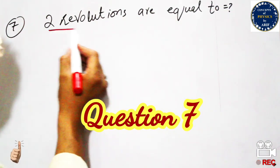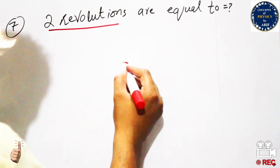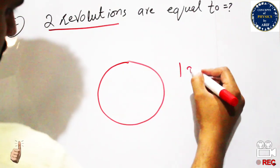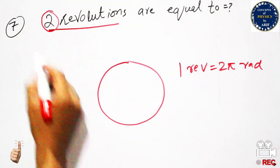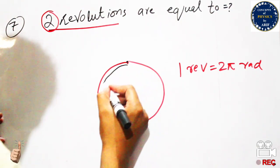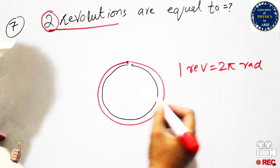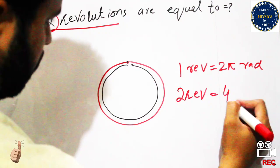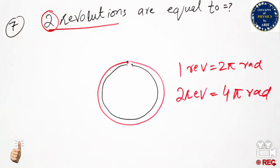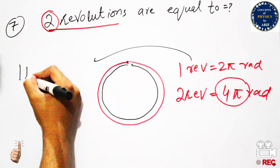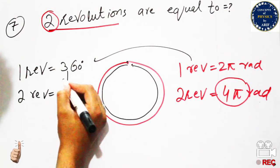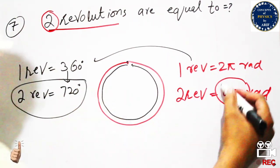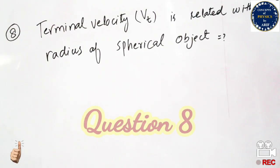The next question asks: two revolutions equals how many radians or degrees? One revolution equals 2π radians, so two revolutions equal 4π radians. You can also convert: one revolution equals 360 degrees, so two revolutions equal 720 degrees. You can put either 4π radians or 720 degrees as the correct answer.